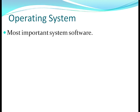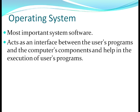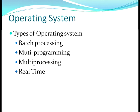The most important system software is the operating system. You must have heard terms like Windows and DOS — all these are operating systems. It is system software that acts as an interface between the user's programs and the computer's components, helping in the execution of programs. Types of operating systems include batch processing, multiprogramming, multiprocessing, and real-time operating systems.